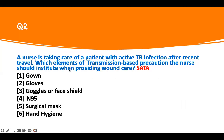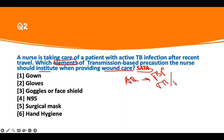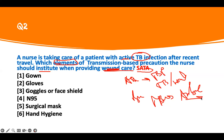The next one. A nurse is taking care of a client with active TB infection after recent travel. Which element of transmission-based precaution should the nurse institute when providing wound care? What is the problem? A nurse is taking care of a patient with active TB infection. What I'm being asked is: I need to institute transmission-based precaution for somebody with TB, and I need to take care of their wound. The buzzwords are active TB and wound care. What is the transmission-based precaution for TB? You already know — it's airborne. Therefore, I need to institute airborne precautions specifically.